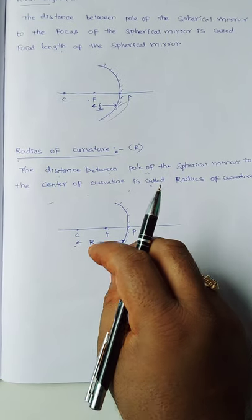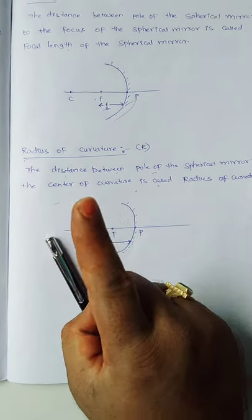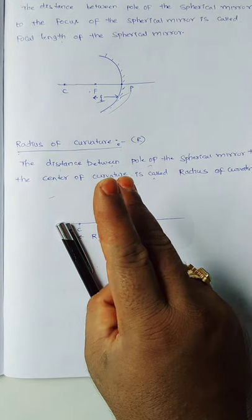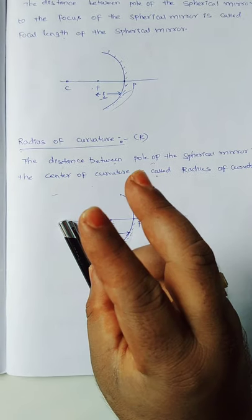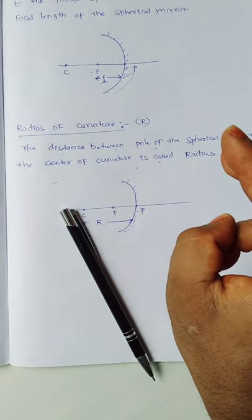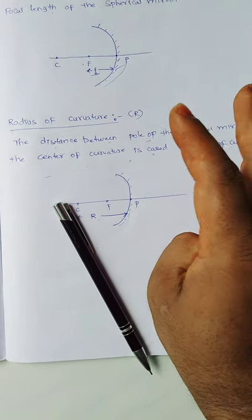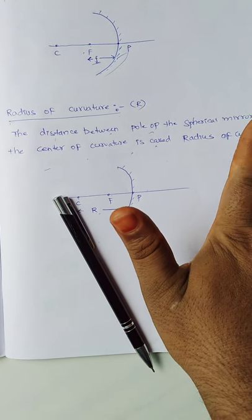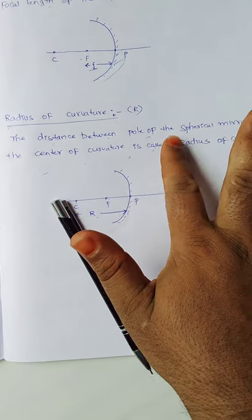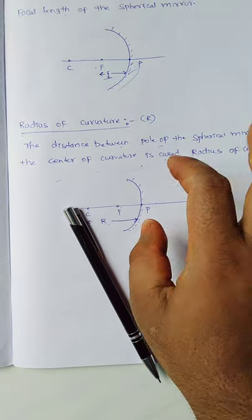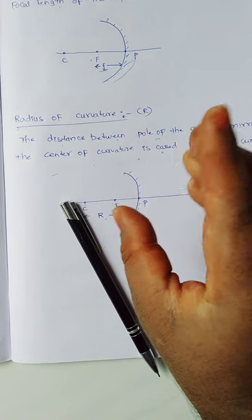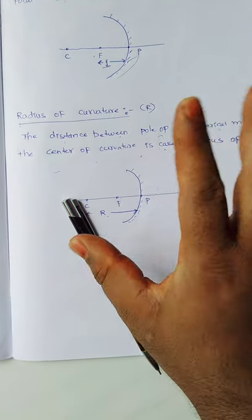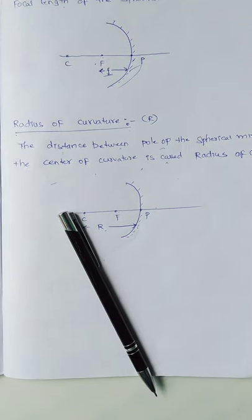These are the different terminologies related to the spherical mirror: pole of the spherical mirror, center of curvature, focus, focal length, and radius of curvature. These terminologies are the same for both concave and convex mirrors. Thank you.